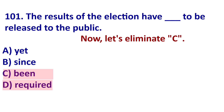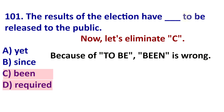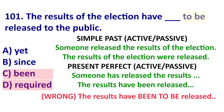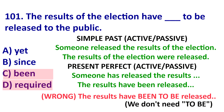Next, let's eliminate C: 'been.' In this situation, there would be no reason to use 'to.' For example, simple past: 'the results of the election were released.' Present perfect passive: 'the results of the election have been released.' We wouldn't need to add a 'to' — there's no reason. We would just say 'the results of the election have been released to the public.' So 'to' is unnecessary here.